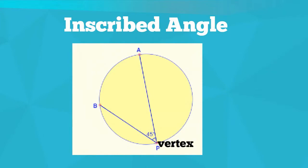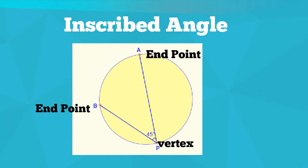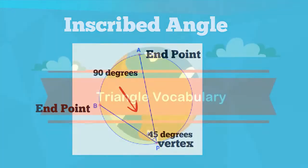An inscribed angle is an angle in which the vertex lies on the circle and the endpoints are also on the circle. The inscribed angle equals one half the intersected arc.